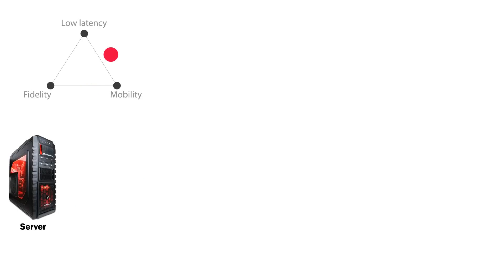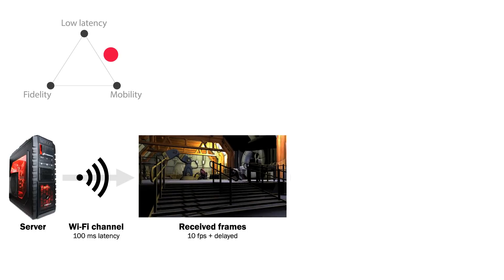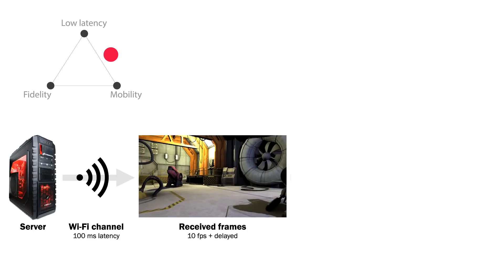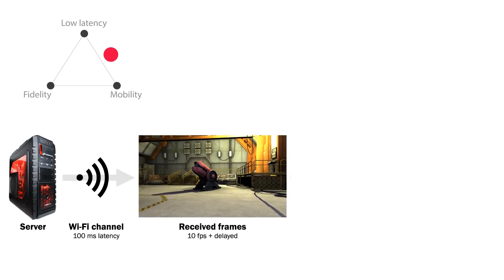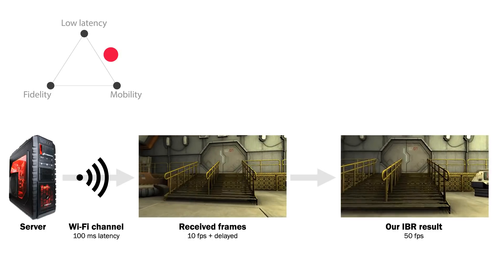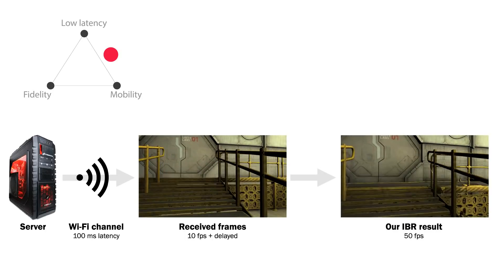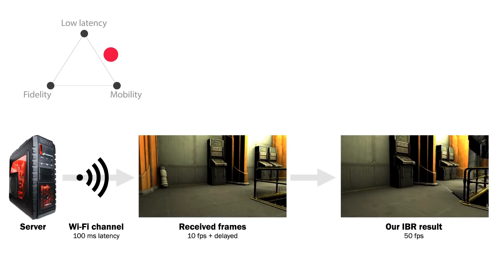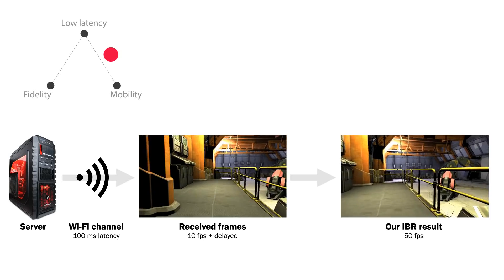To enable higher fidelity, the graphics can be rendered on a server and sent over Wi-Fi. But network latency is typically high and server frame rates are often low. We present a new image-based rendering architecture that masks both problems and makes the graphics look smooth and responsive.